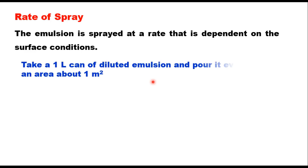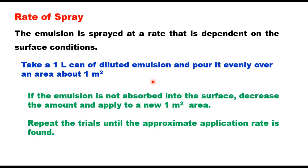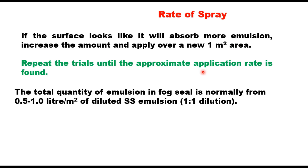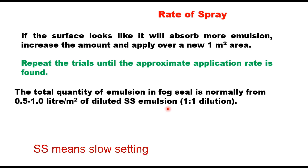A simple procedure to determine the rate of spray: take one liter of diluted emulsion and pour it evenly over an area of about one square meter. If the emulsion is not properly absorbed into the surface, decrease the amount and apply to a new one square meter area, repeating until the approximate application rate is found. If the surface looks like it will absorb more, increase the amount and repeat trials. IRC SP100 suggests that the total quantity of emulsion in fog seal is normally from 0.5 to 1 liter per square meter of diluted SS emulsion, diluted in the ratio of 1:1.